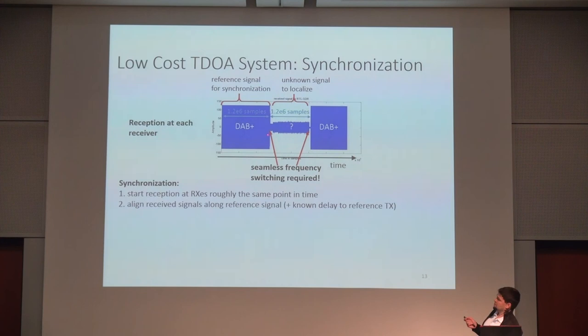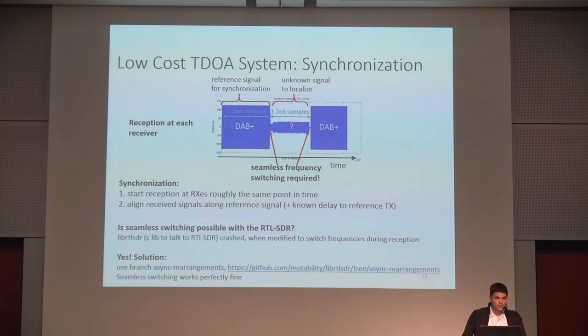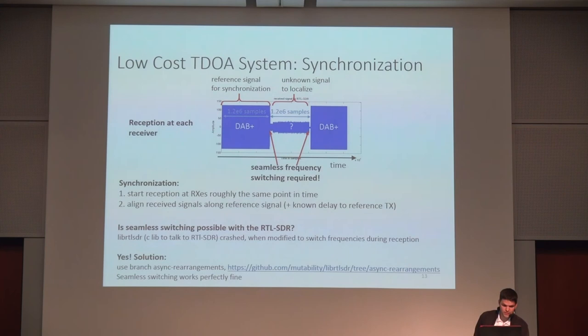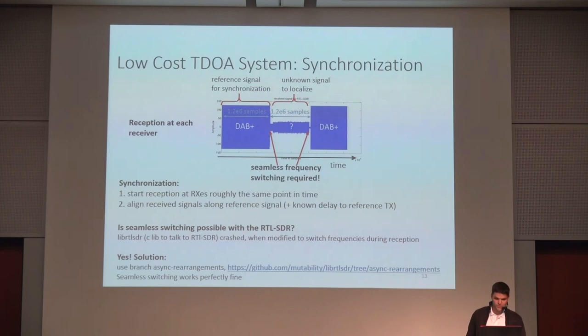One very important thing is that it must be possible to switch the frequency during reception seamlessly — without any single sample loss, otherwise synchronization is lost. I took the standard RTL-SDR library and modified it to switch the frequency during reception, but it crashed and didn't work. However, I found a branch of the librtlsdr library called Async Rearrangement, which does something with USB and callback functions, and in the end it worked perfectly. I could reprogram this library to change the frequency during reception without losing a single sample.